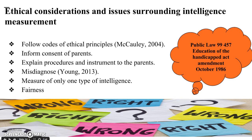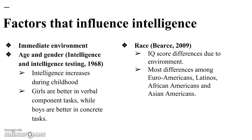To avoid ethical violations, the Code of Ethical Principles should be followed. Parents should sign informed consent and be aware of the procedures and instruments in use. All rules and considerations should be followed to avoid misdiagnosis of the child. The Education of the Handicapped Amendment establishes techniques to identify developmental delays, infants at risk, plan intervention services, and conduct effective evaluation. Intelligence is influenced by family and school environment and increases during childhood. There are significant differences among certain races — for example, Latino children perform better on the performance part, while African Americans perform better on the verbal part. Poverty negatively affects IQ scores, and scores were found to be dependent on parents' occupation.